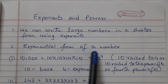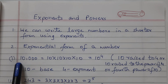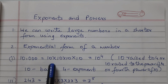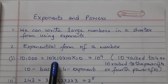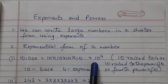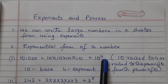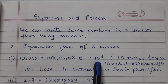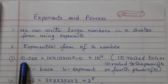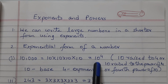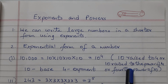Exponential form of a number — what is this? 10,000 can be written as 10 into 10 into 10 into 10, so 10 is multiplied 4 times. We write 10 and on the right top we write 4, meaning 10 is multiplied 4 times. 10 is the base, 4 is the exponent, and this is the exponential form of 10,000. This is read as 10 raised to 4, or 10 raised to the power of 4, or the 4th power of 10.